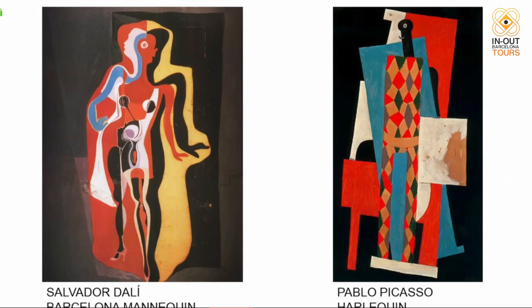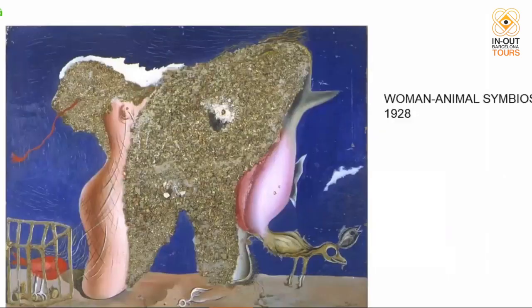Before finding his own style, Dalí was inspiring from other artists. He finally found himself in Surrealism. Surrealism expresses whatever comes into the mind at the same moment — expressed across all artistic forms: painting, sculpting, writing, and poetry. It's about the subconscious and the dream world. That's why we have these weird compositions, like this woman-animal symbiosis — one of his earliest Surrealist paintings.